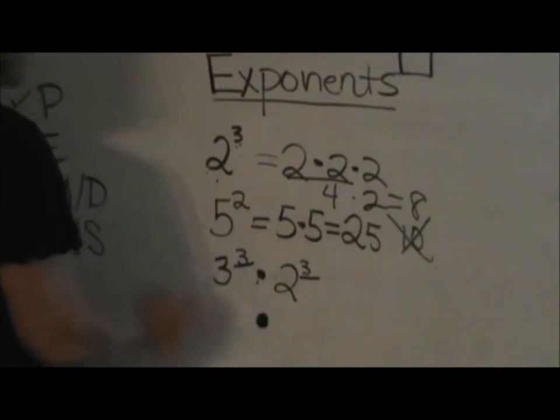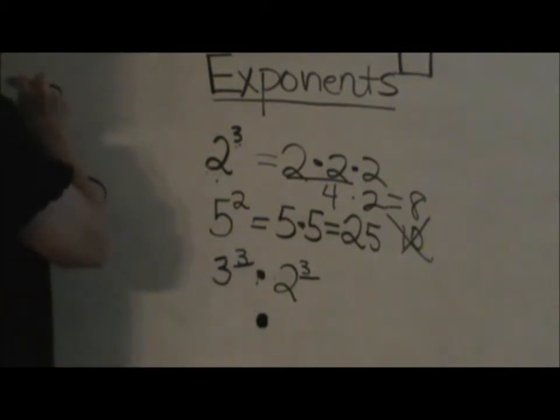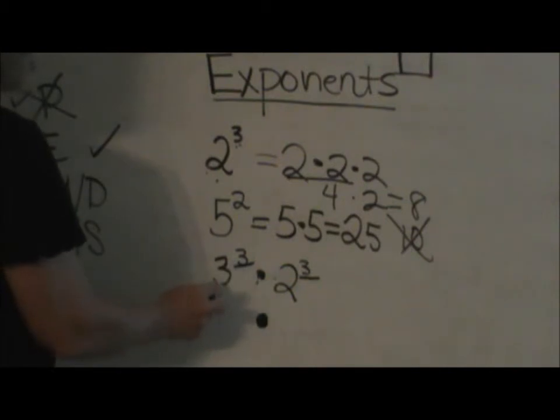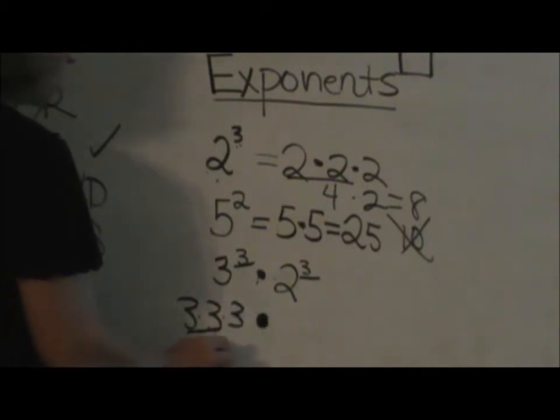So I'm going to bring my multiplication step down because in the order of operations, parentheses comes first and we don't have any. Exponents is the next step. So 3 cubed means 3 times 3 times 3. 3 times 3 is 9, 9 times 3 is 27.